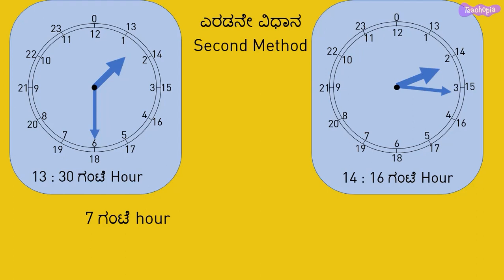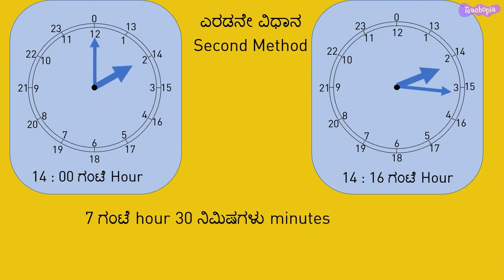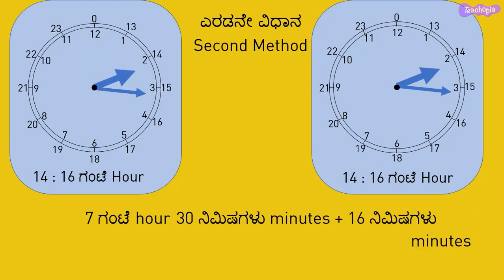To get from 13:30 to 14:00, 30 minutes should be added. To get from 14:00 to 14:16, 16 minutes should be added. The total number of minutes to be added to 13:30 to reach 14:16 is 30 minutes plus 16 minutes, which equals 46 minutes. Therefore, the time duration will be 7 hours and 46 minutes.